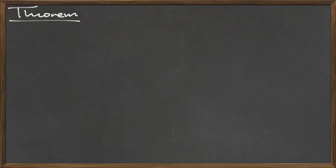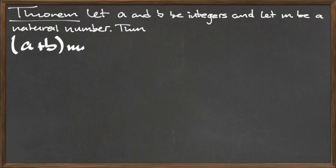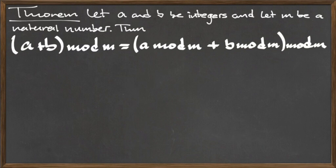The final topic of this video is to discuss two theorems that describe how mod behaves under the operations of addition and multiplication. The proofs for these two theorems can be found in the text and will not be proven here. Rather, we will state the theorems without proof and then provide an example. The first theorem describes how mod behaves under the operation of addition. Let a and b be two integers and let m be a natural number. Then the quantity (a plus b) mod m is equal to the quantity ((a mod m) plus (b mod m)) all mod m.